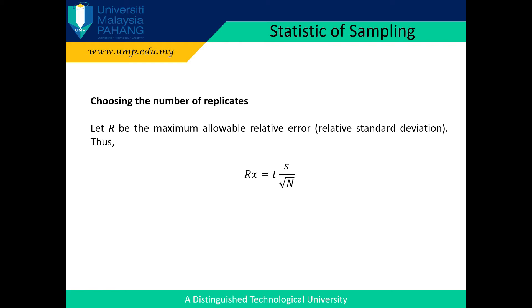The value of N from the first approximation, rounded to the next higher integer, can be put back into the equation to calculate the value of T. The new value of T can be used to recalculate the value of N. The procedure is repeated using the new values of T and N until the answer doesn't change.